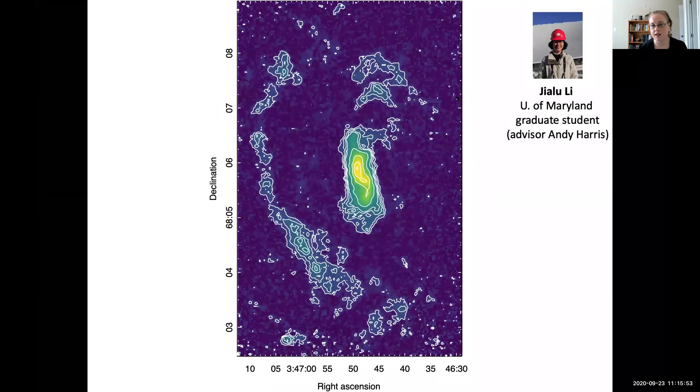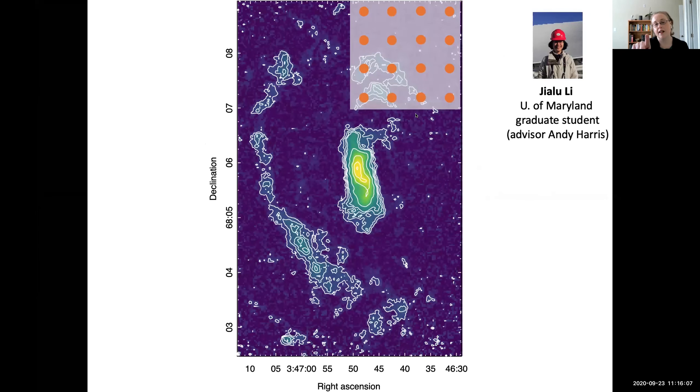So here is Jilu Li. She's a University of Maryland graduate student, advisor Andy Harris. You've seen a lot of her work so far in the conference. But here is IC342, and there's the Argus footprint. So this is a three by five arc minute region. And so the current Argus 16 footprint actually fits quite nicely on galaxies.